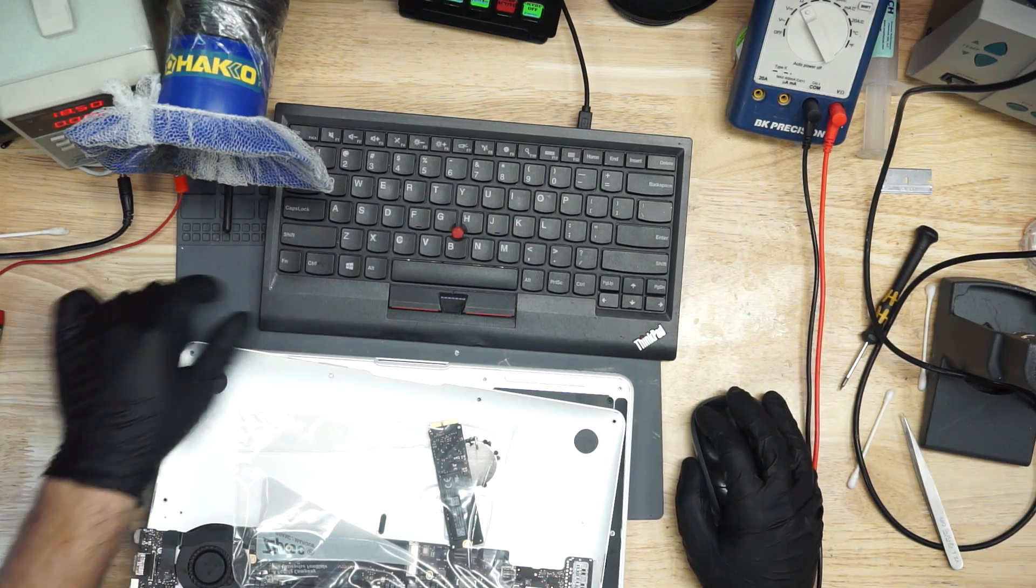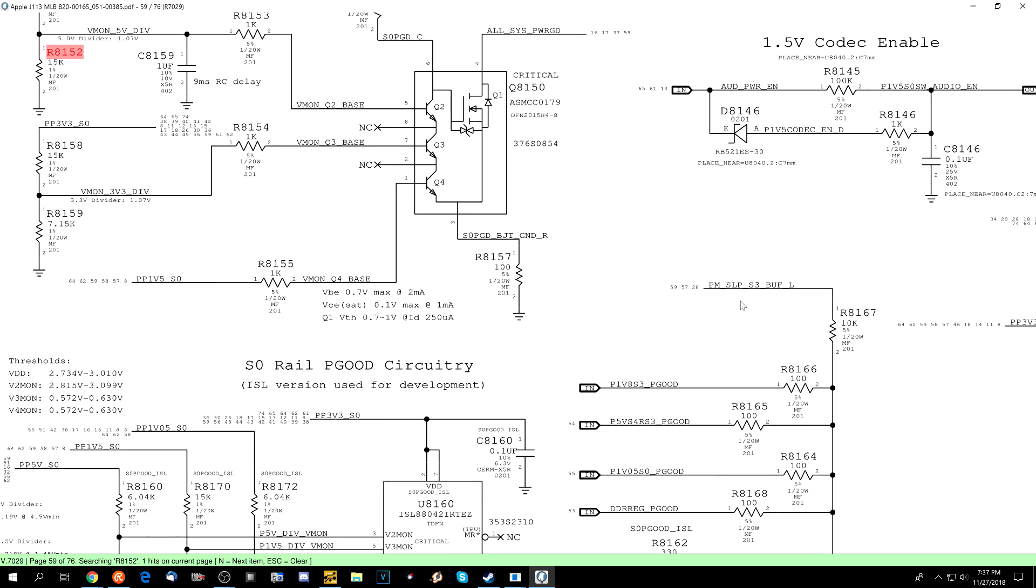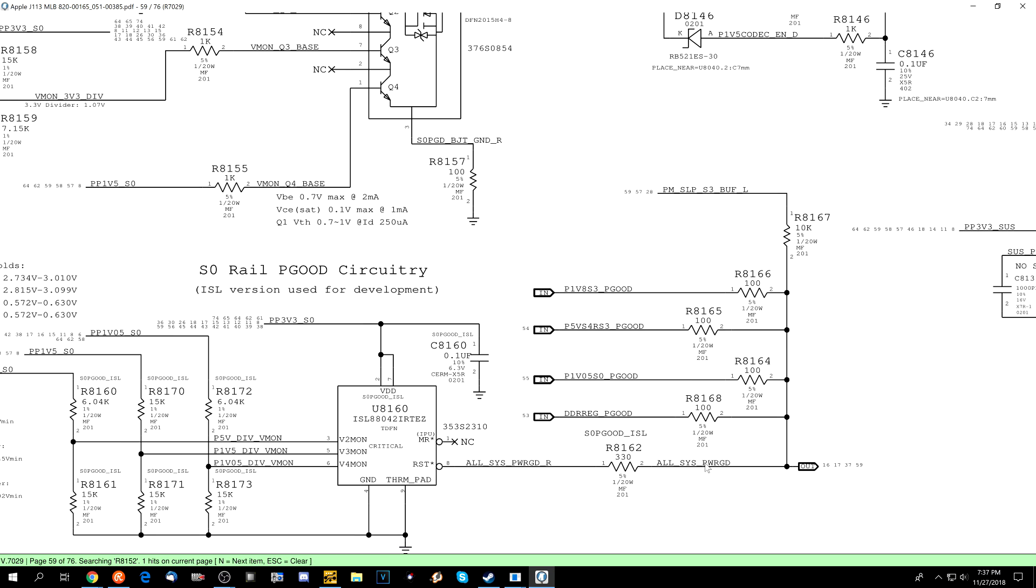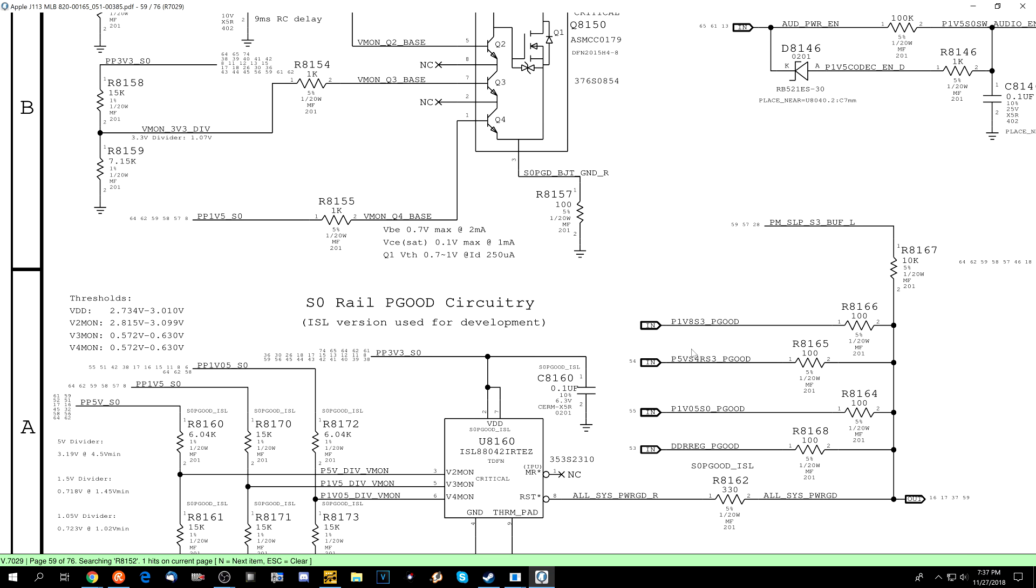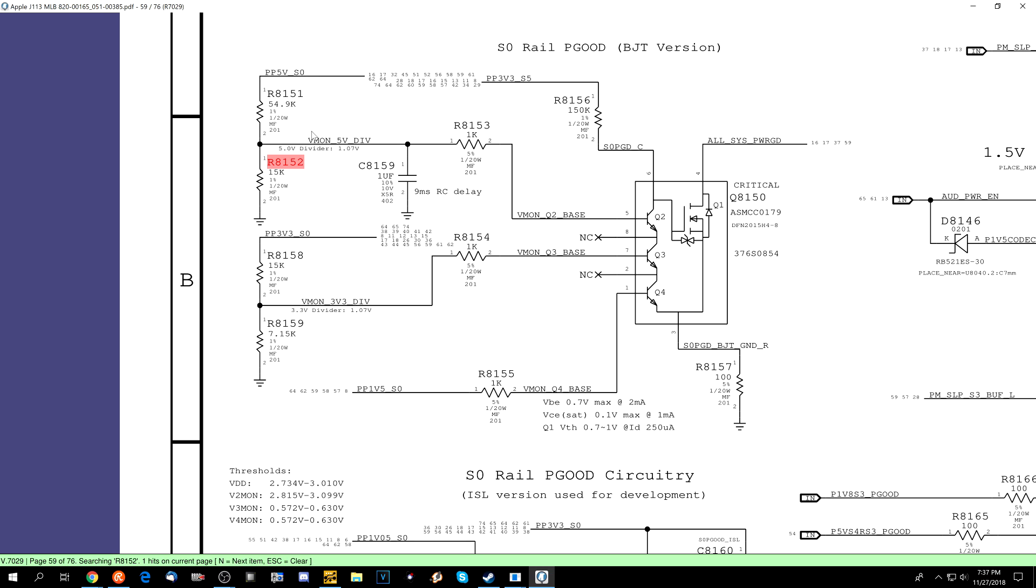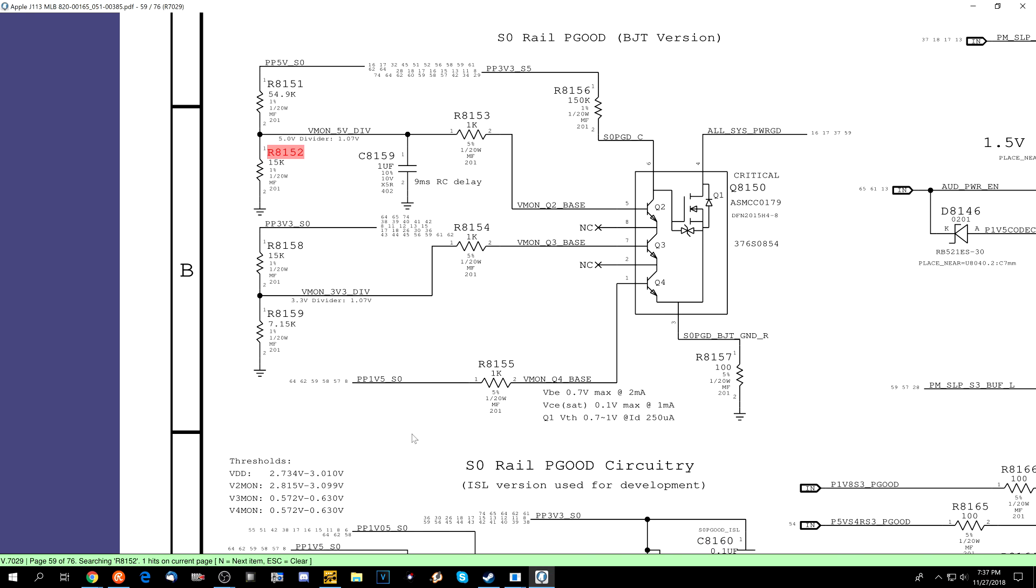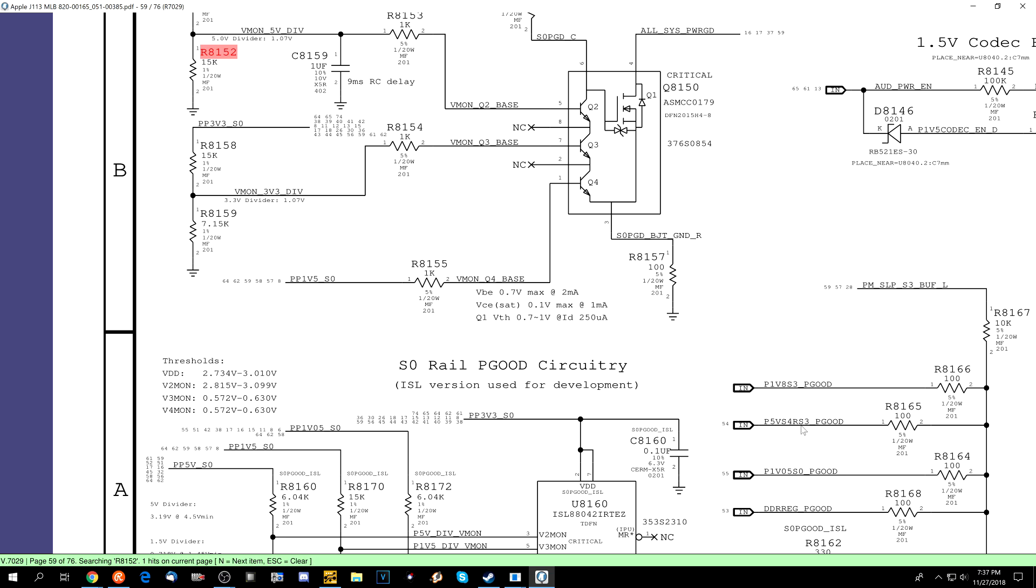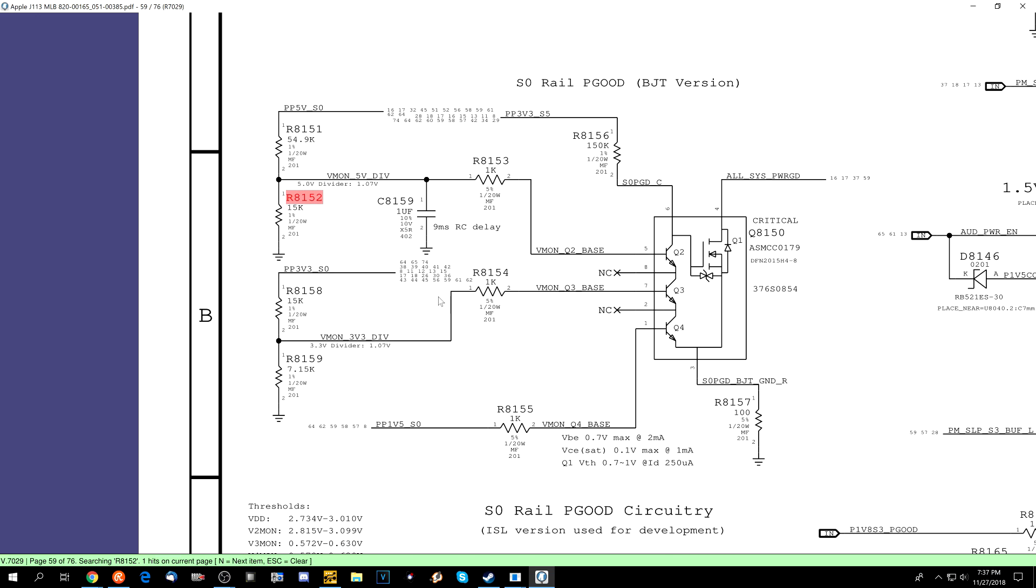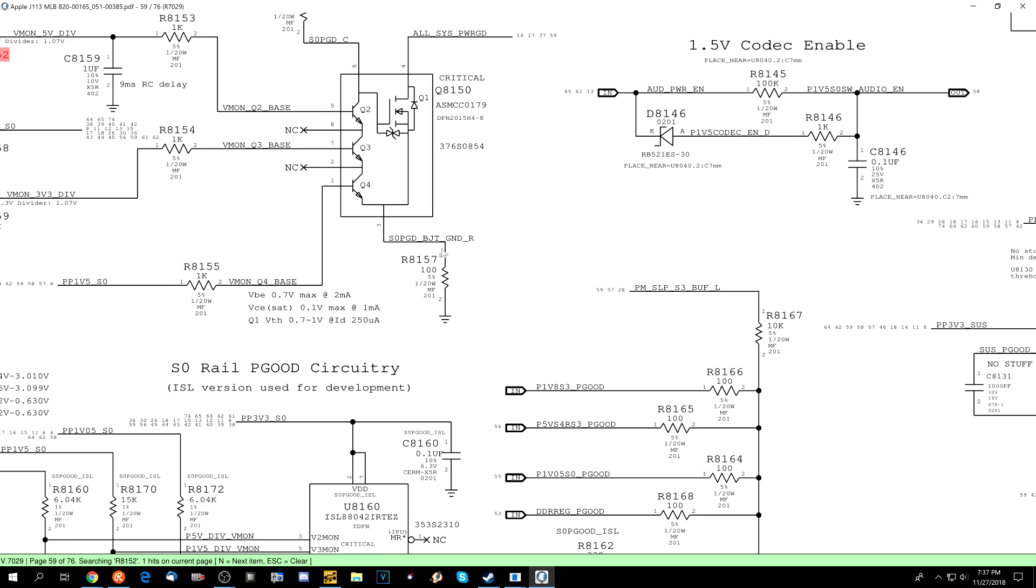Let's take a quick look at the schematic, just so I can go over this very common issue. All sys power good on many of the old machines was required in order for you to get CPU vCore. If you don't have all sys power good, you will get every rail besides CPU vCore, unless one of these rails is missing, of course. But a lot of the times all sys power good is missing, it's not because one of these specific rails is missing. A lot of the times it's missing because the all sys power good circuit itself has been damaged.